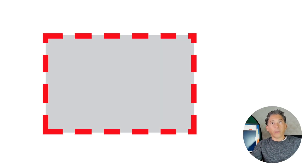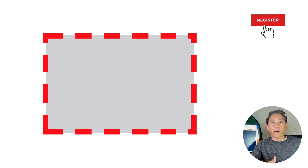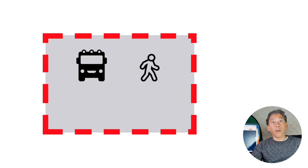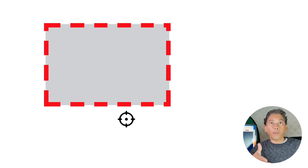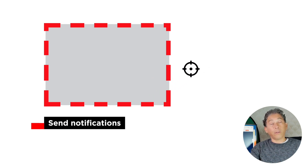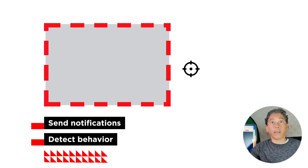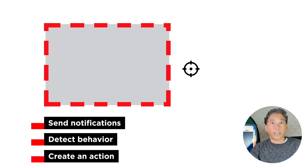Geofence is a virtual location-based boundary or barrier that is usually used for mobile devices — assets that are mobile, like a truck, a person using a phone, a bicycle, or your automobile. Once we have the assets, we can use Geofence to detect if the asset is inside, outside, or crossing the boundary, and we can send notifications, detect specific behavior, or trigger a specific action when the boundary is crossed.